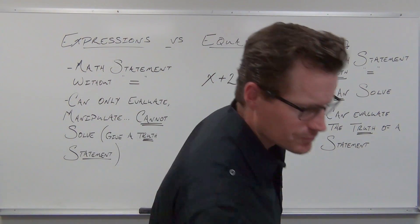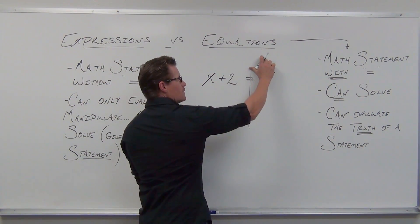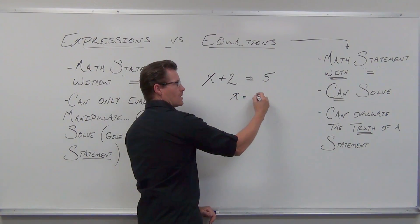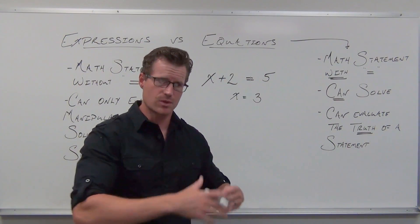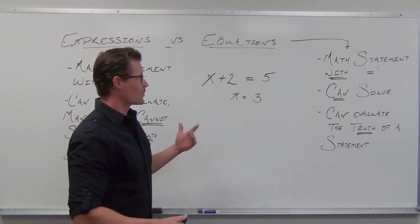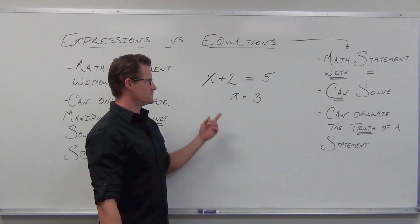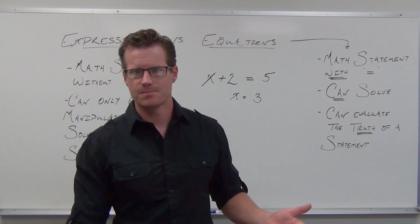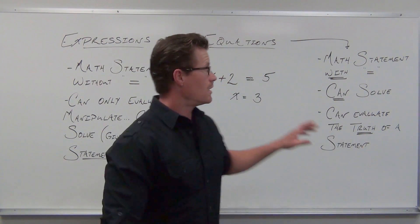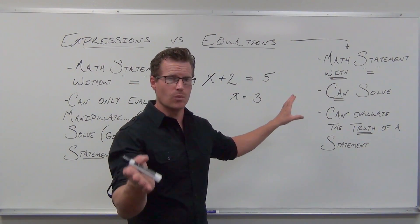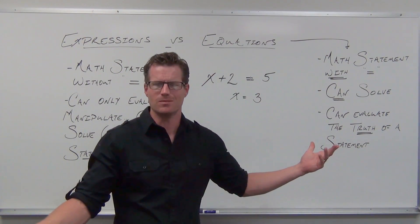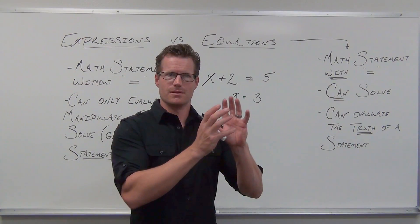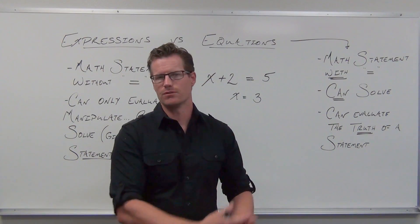When we call something an answer to an equation, we get something called a solution. So we have expressions — no equal signs — and we have equations, which have equal signs. The important thing about equations is that we can solve them. Right now we're kind of doing this in our head thinking, what number makes this work? 3. Why 3? Because if I put 3 there, 3 plus 2 gives me 5. Kind of a guess-and-check our way through it.